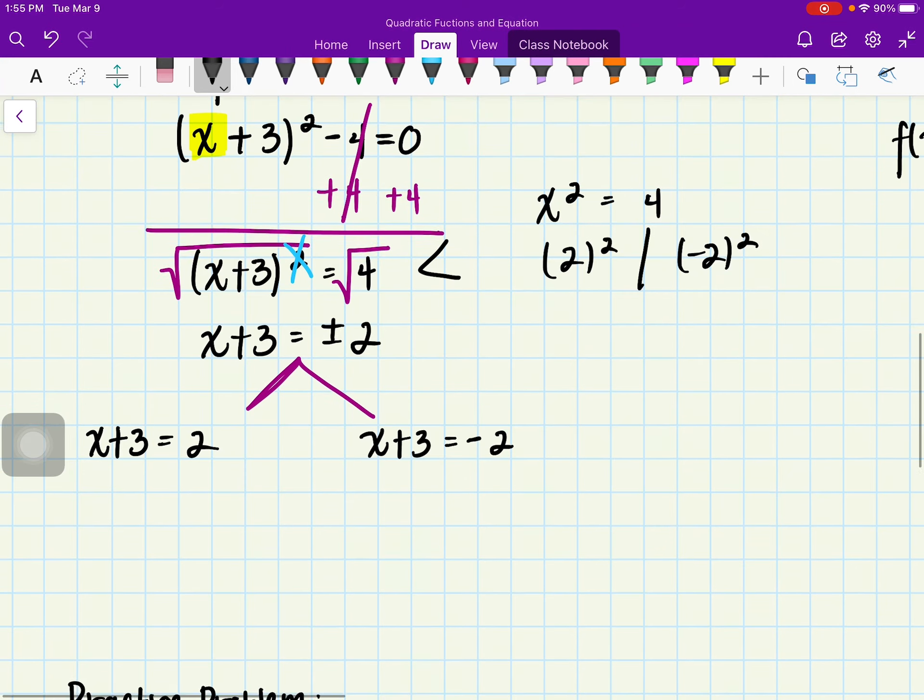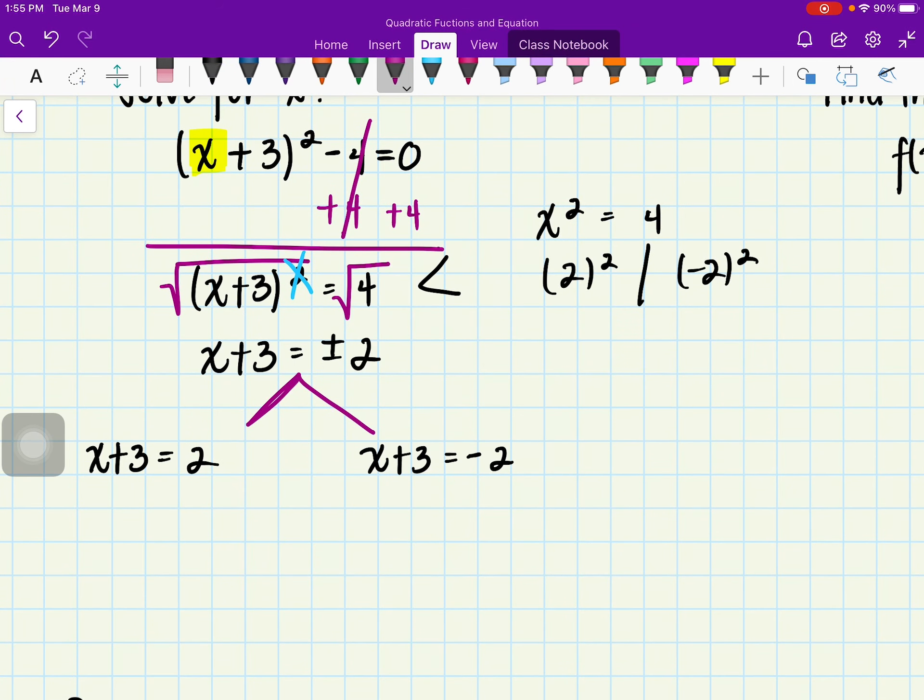Alright and these are simple two step equations. I'm going to go ahead and subtract 3 to both sides. And we have x in this case is equal to a negative 1. And then on the other side I'm going to go ahead and subtract 3 as well. And in this case x is going to be equal to negative 5. Now we have x = -1 or x = -5. And in this case these represent our x-intercepts. That's what they represent here.